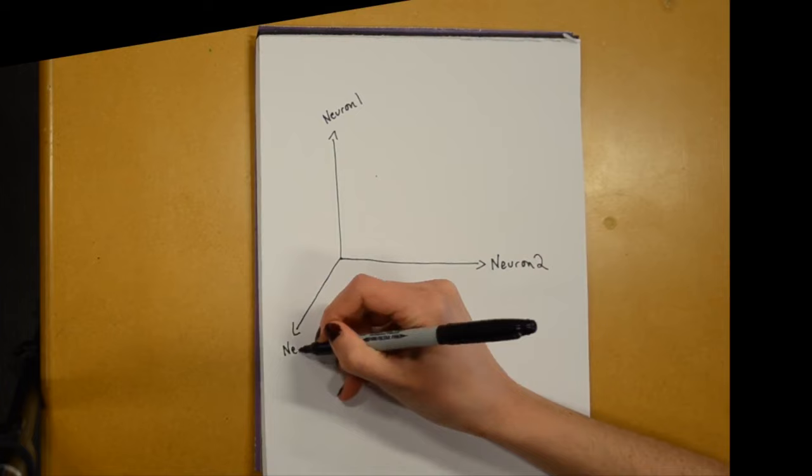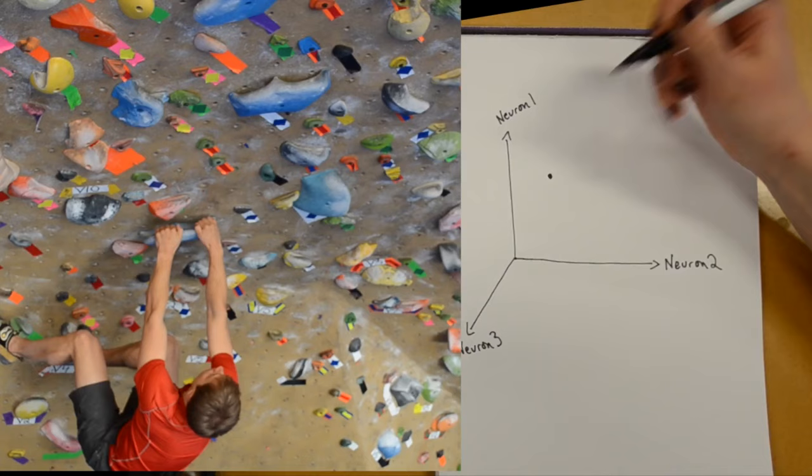To visualize this data, we represent a single moment in time as a point in a coordinate system where each axis represents the firing rate of a single neuron. We can then look at how this neural state evolves in time over the course of a reach.